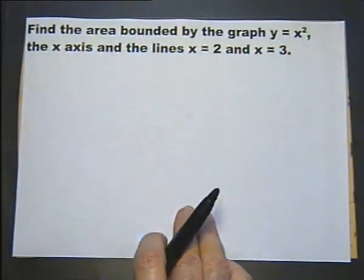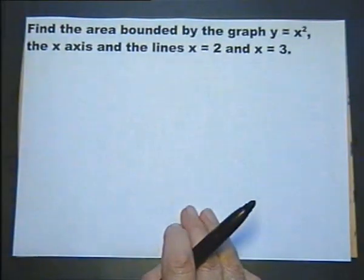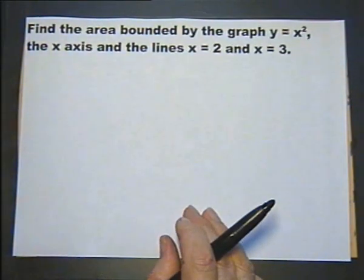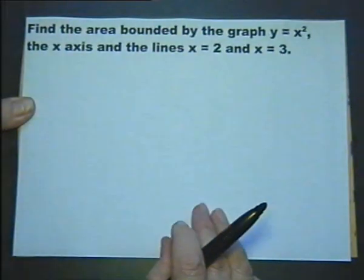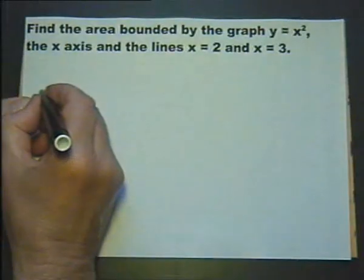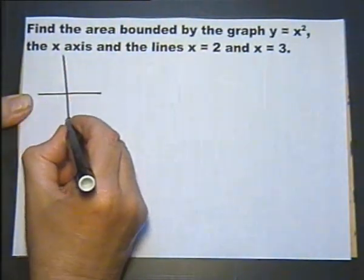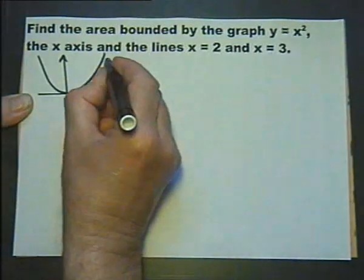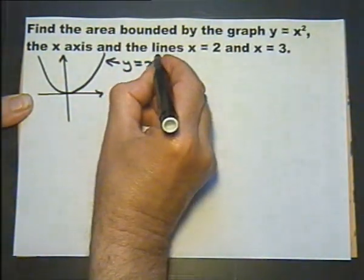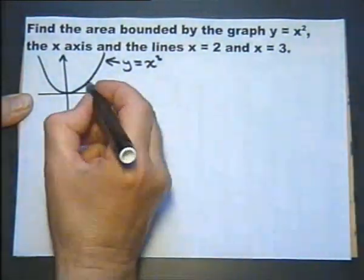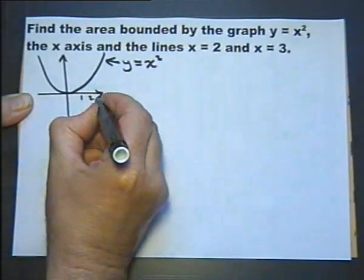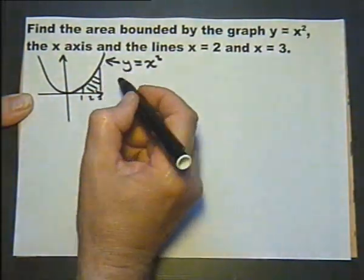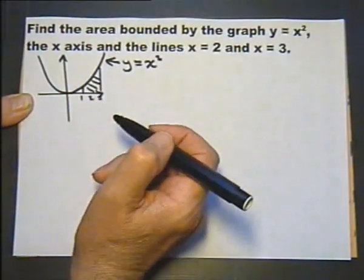Now integration will actually calculate the area under a graph. So let's look at this first example: find the area bounded by the graph of y equals x squared, the x axis, and the lines x equals 2 and x equals 3. As with any question, if you can do a sketch, it's a good idea because it helps you see what's going on. So there's the graph of y equals x squared. If I put 1 there, 2 there and 3 there, we're talking about finding the area here. It's bounded by the graph of y equals x squared and the x axis and the line x equals 2 and the line x equals 3.